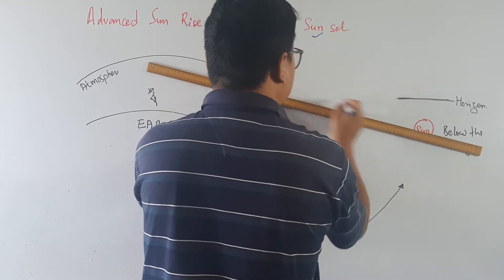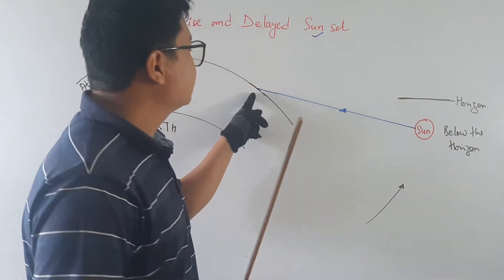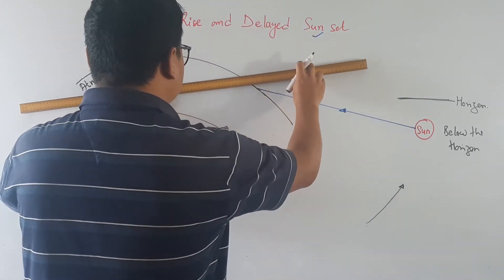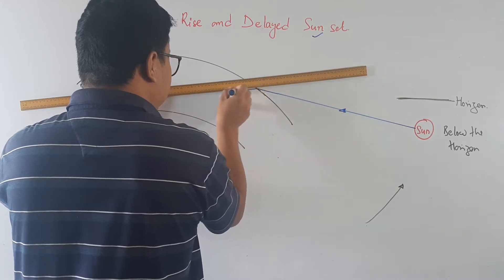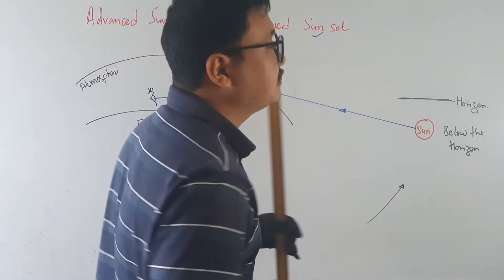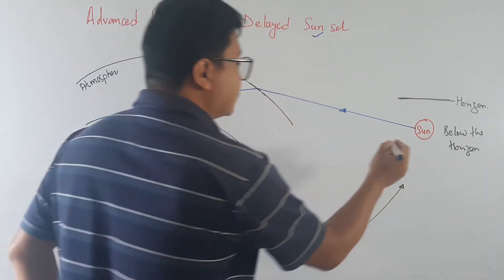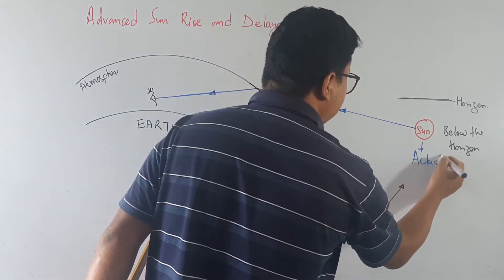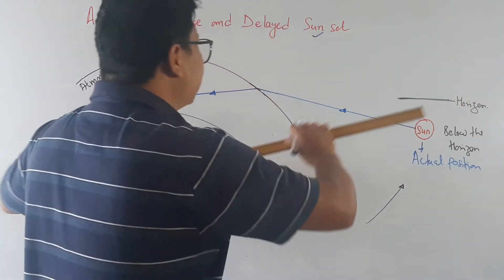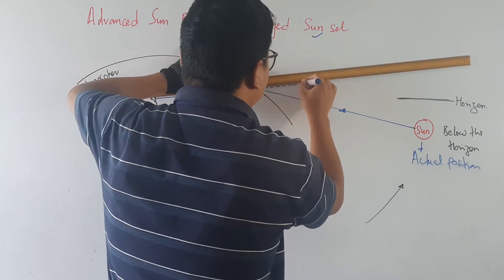The sunlight coming from the sun reaches this point where the Earth's atmosphere begins, and refraction takes place there. I am drawing the refracted ray as a straight line. This is the refracted ray of light that reaches our eye. The sun is below the horizon — we should not see it — but now we extend the refracted ray back as a straight line, and we reach the apparent position of the sun.